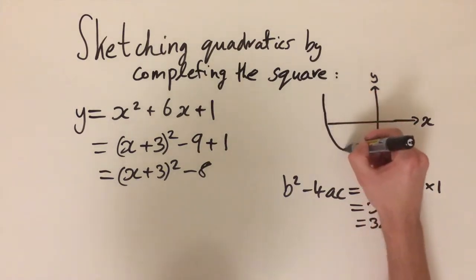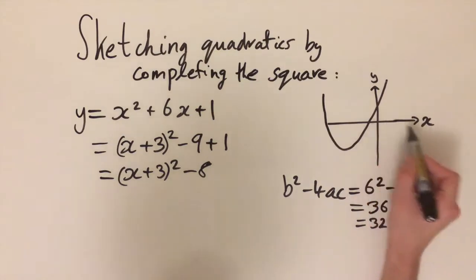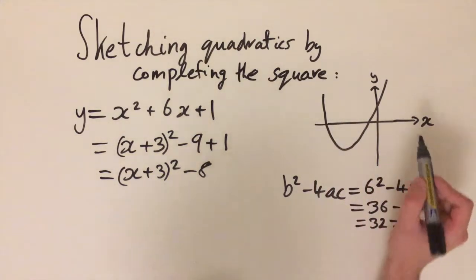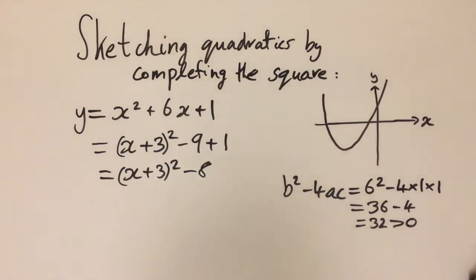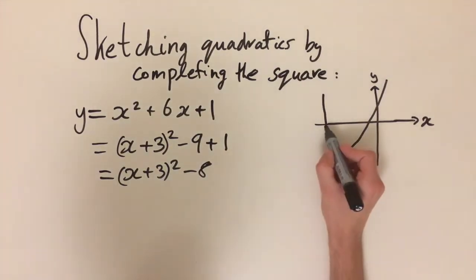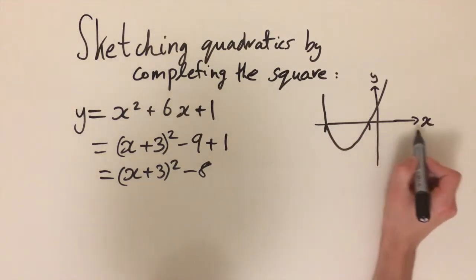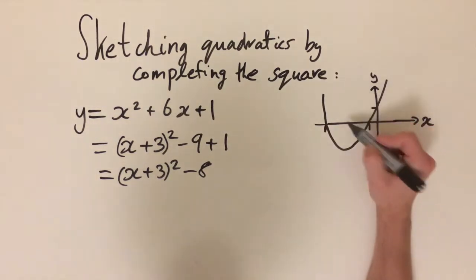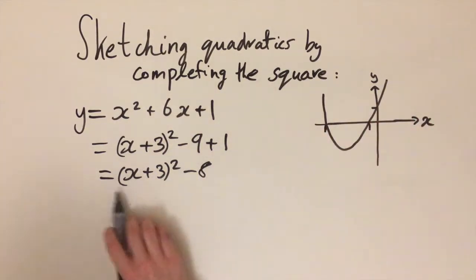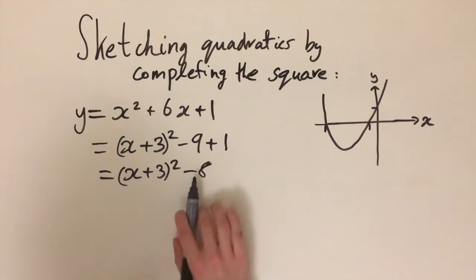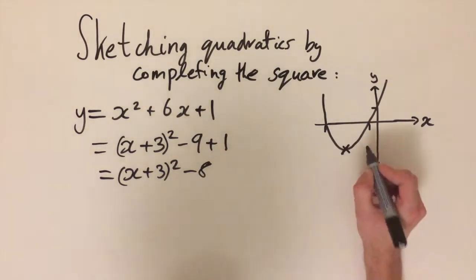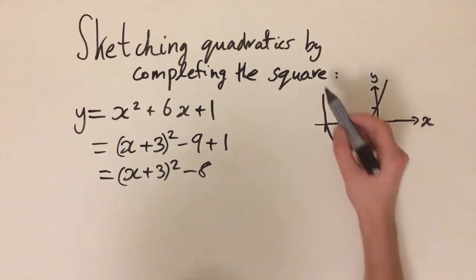Now we can sketch what the graph is going to look like — something like this. We have two real points of intersection on the x-axis and one on the y-axis, and we want to find out what these are. The completed square form is also going to tell us the minimum of this quadratic function, because the graph goes upwards and so the lowest point is the minimum.